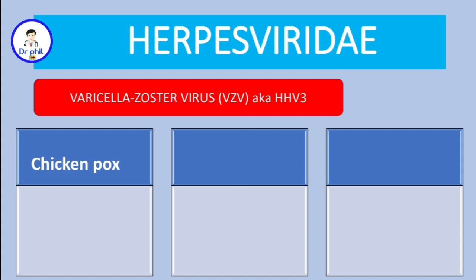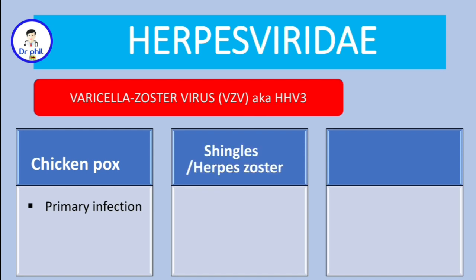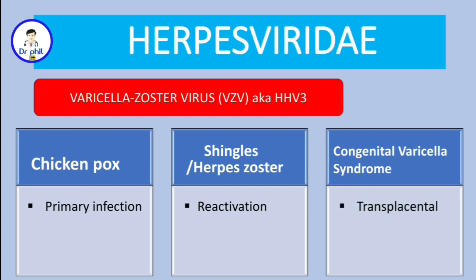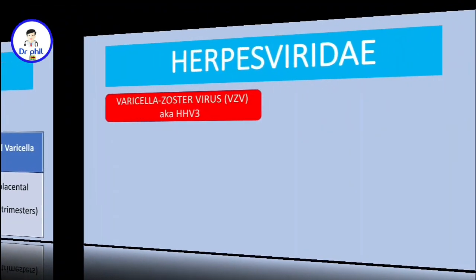There are three manifestations of VZV infection. First, chickenpox, which occurs as a result of primary infection. Second, shingles, also known as herpes zoster, which occurs due to reactivation of the virus latent in the dorsal root ganglia. Third, congenital varicella syndrome, because the virus can cross the placenta, especially in the first two trimesters.